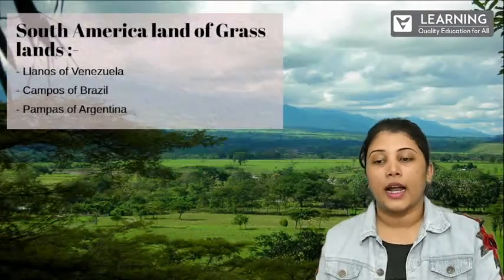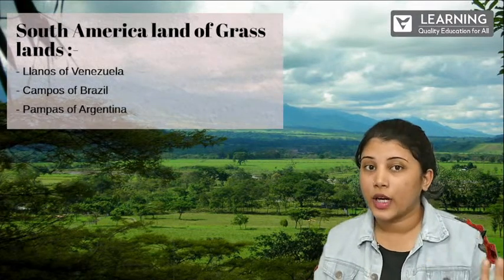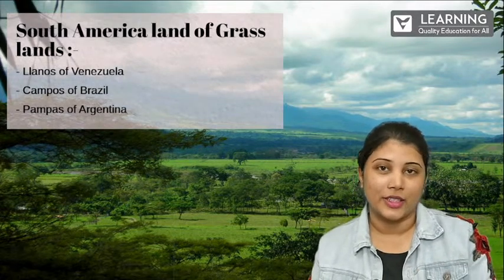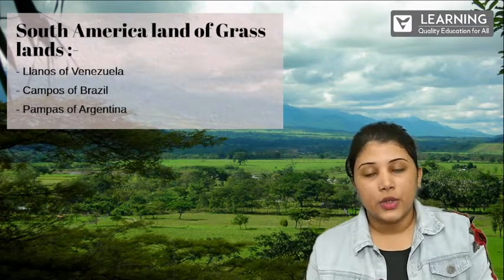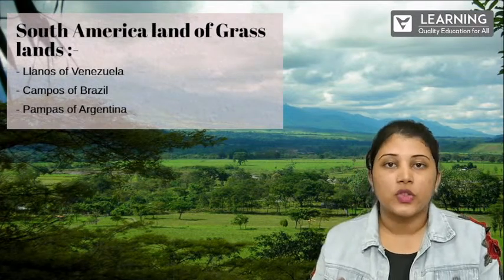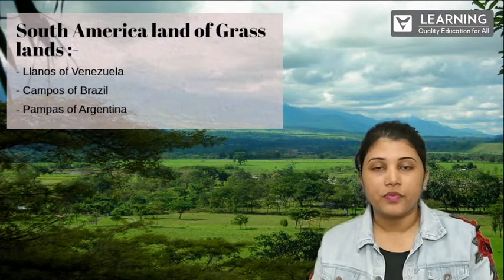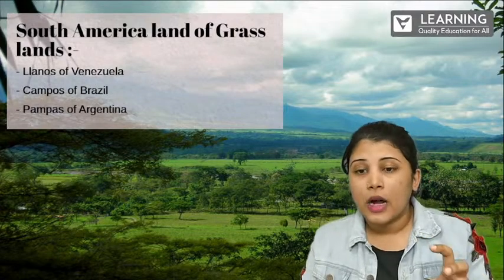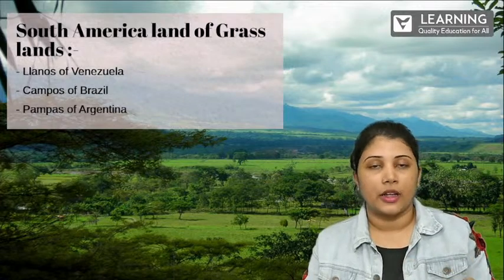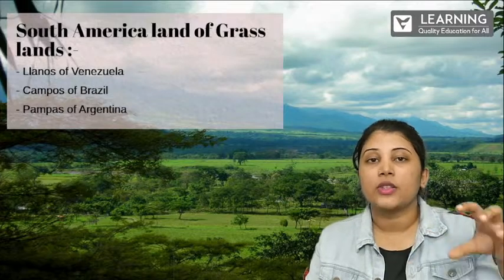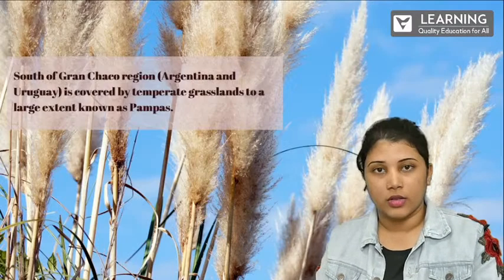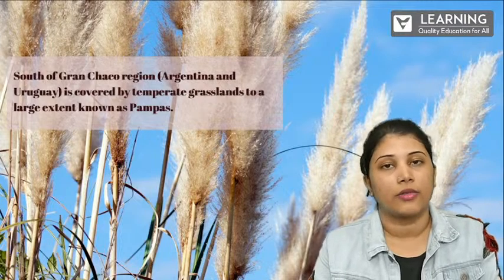South America is also called the land of grassland, because grasslands are also present in this area. The grasslands are: Llanos of Venezuela, Campos of Brazil, and Pampas of Argentina. These are different kinds of grasses found in their respective localities — Venezuela, Brazil, and Argentina — each with different kinds of grassland.